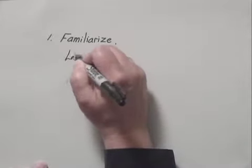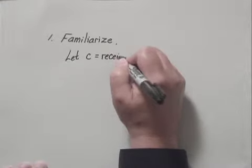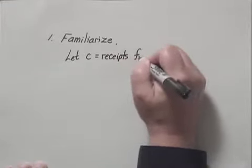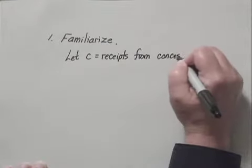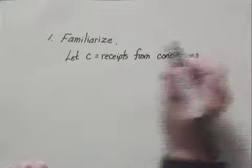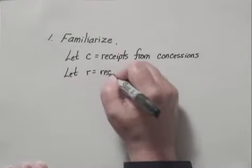We'll let C represent the receipts from concessions, and notice I'm using a C to remind me that it's concessions. We'll let R represent the receipts from the rides.